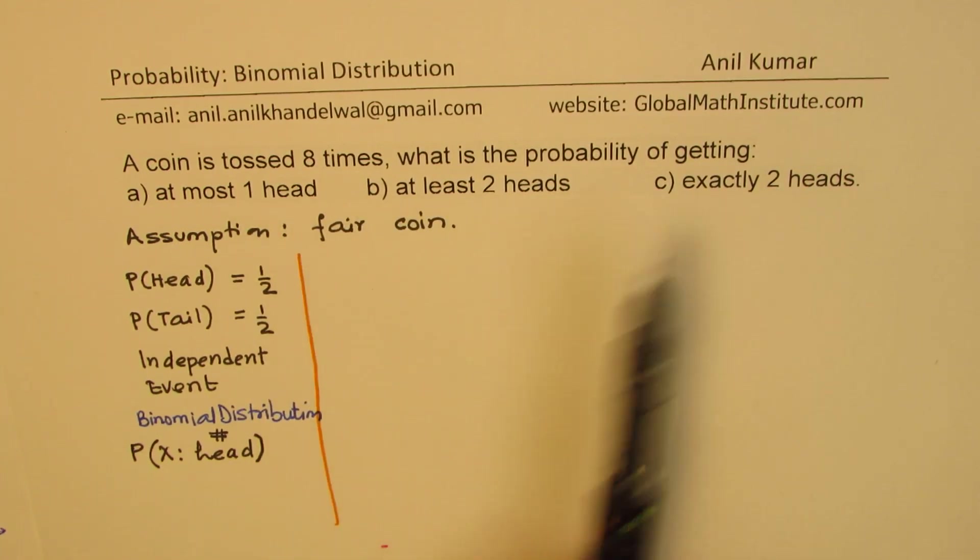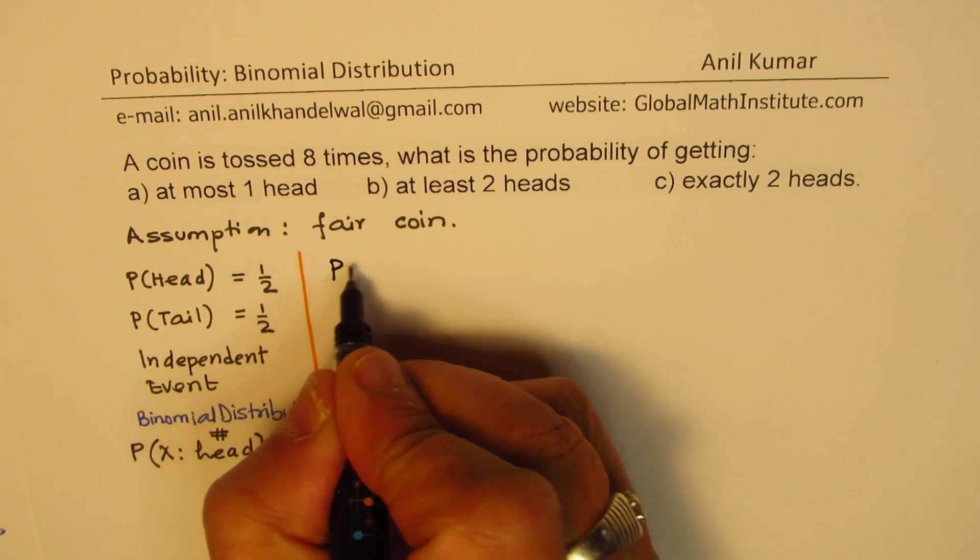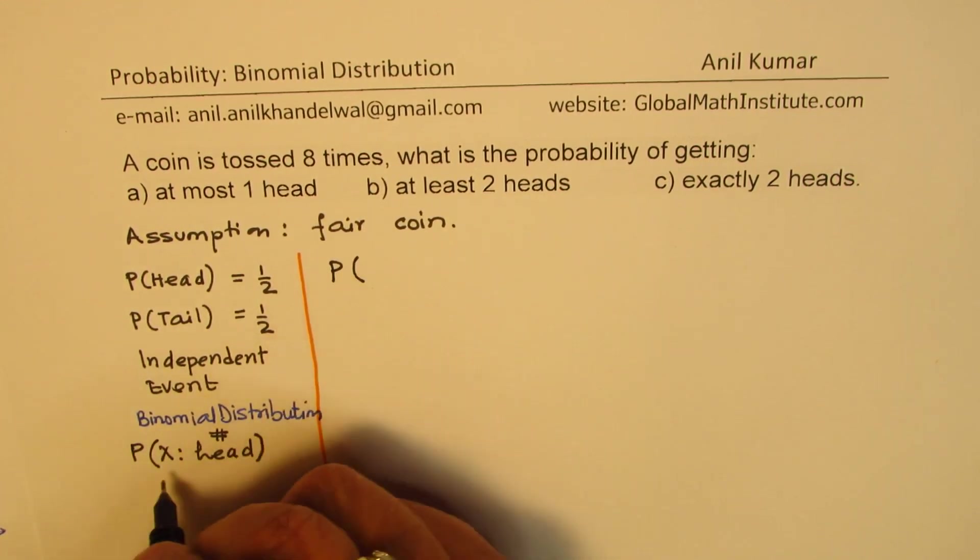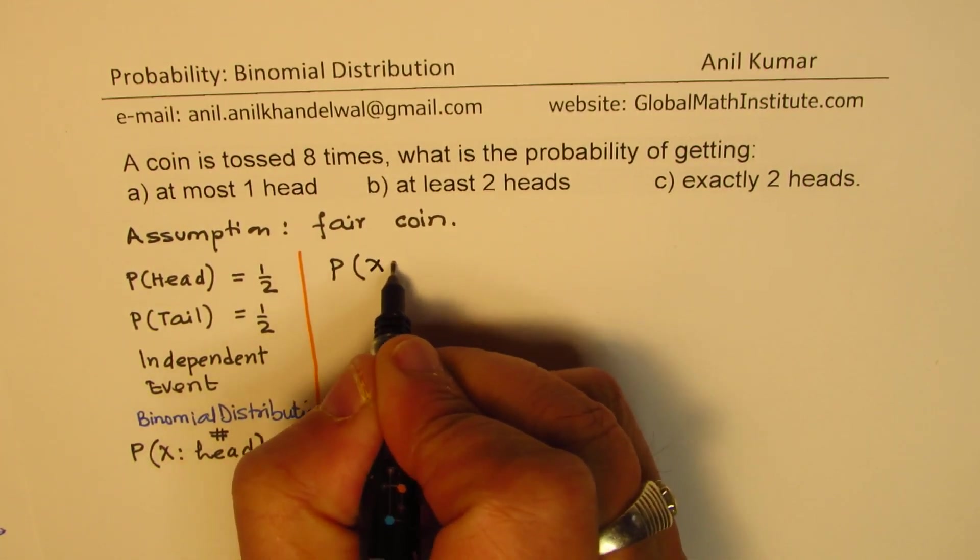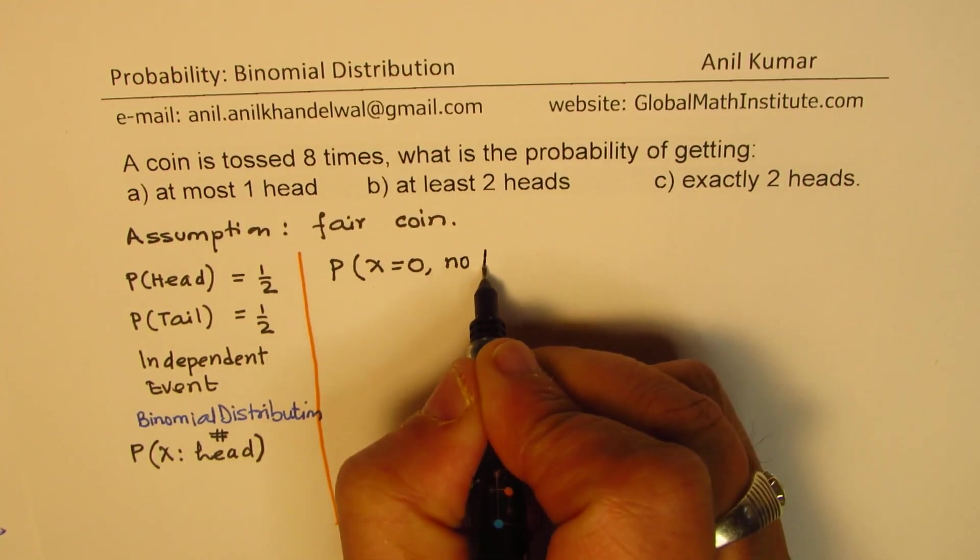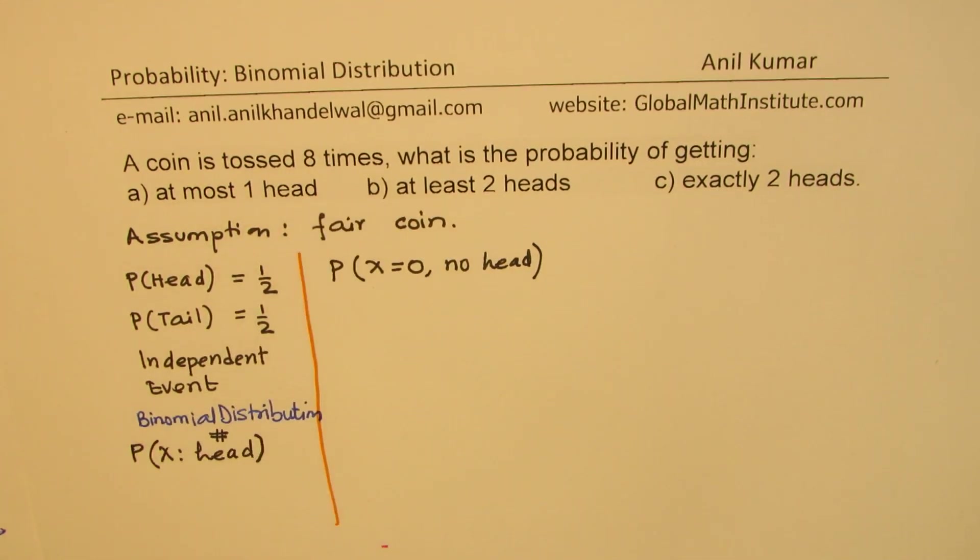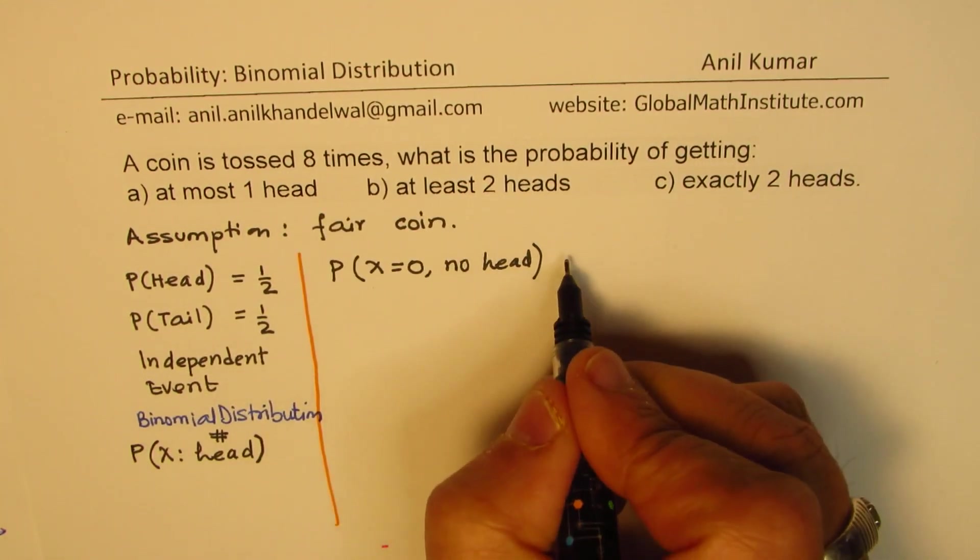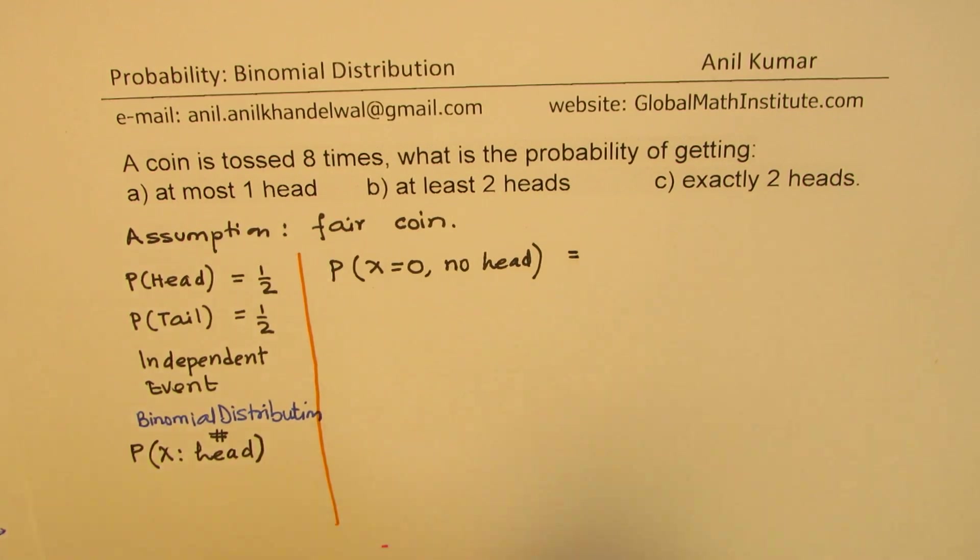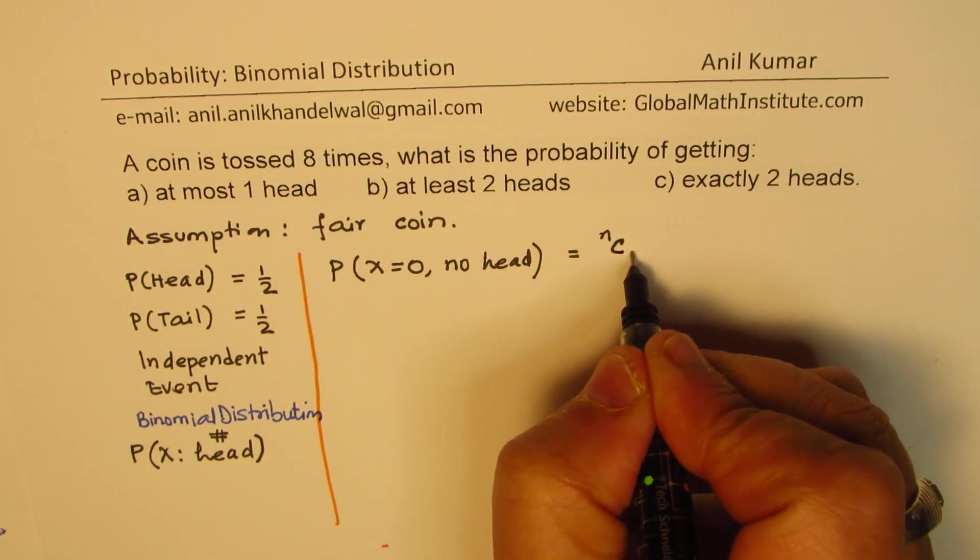Now, to answer these set of questions, let us begin by finding probability of X equals to zero, that means no head in eight tosses. So that means no head means all the time when you toss, you get a tail.